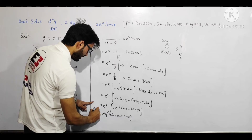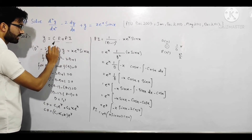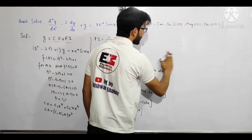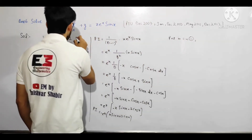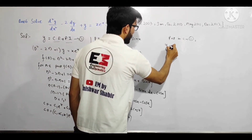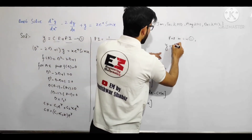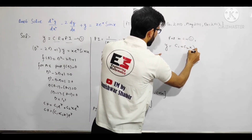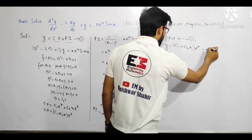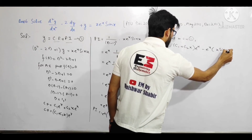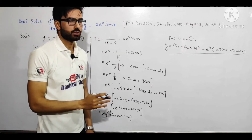So this is our particular integral PI = -eˣ(x sin x + 2cos x). Ab CF aur PI dono mil gaye. Complete solution y = CF + PI: y = (c₁ + c₂x)eˣ - eˣ(x sin x + 2cos x). Yeh is differential equation ka complete solution hai, jo PTU mein kai baar aaya hai.